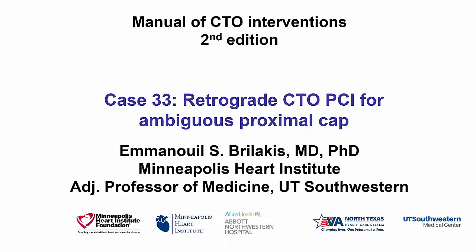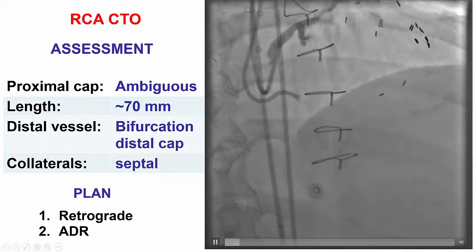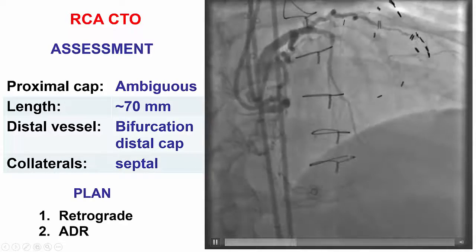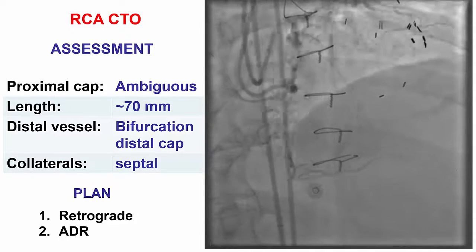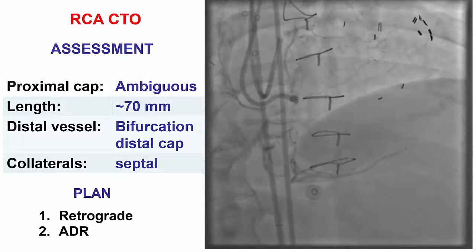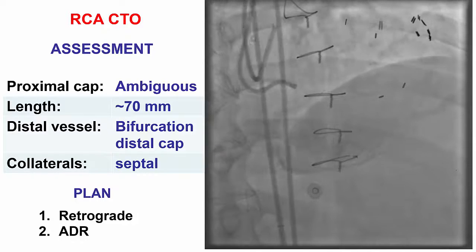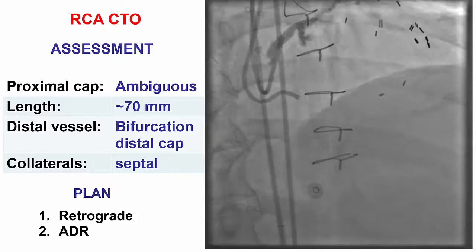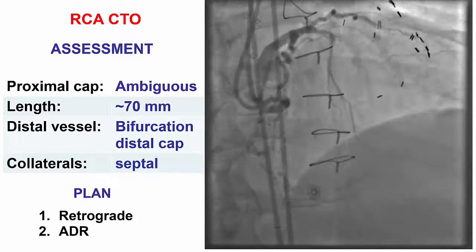Hi, this is Manos Brilakis from the Minneapolis Heart Institute, presenting case 33 for the second edition of the Manual of CTO Interventions. This is a case of a primary retrograde approach for a patient with an ambiguous proximal cap. This was a patient with previous coronary bypass graft surgery who presented with refractory angina and inferior ischemia on non-invasive testing.